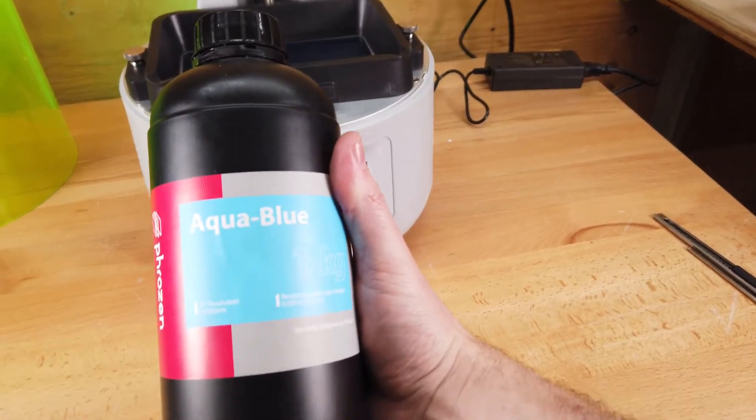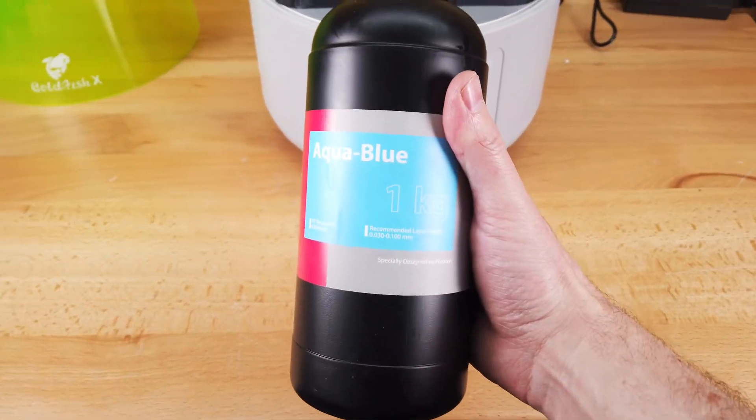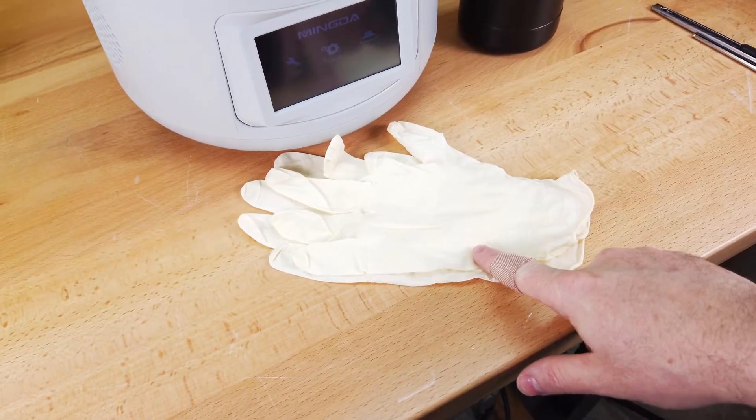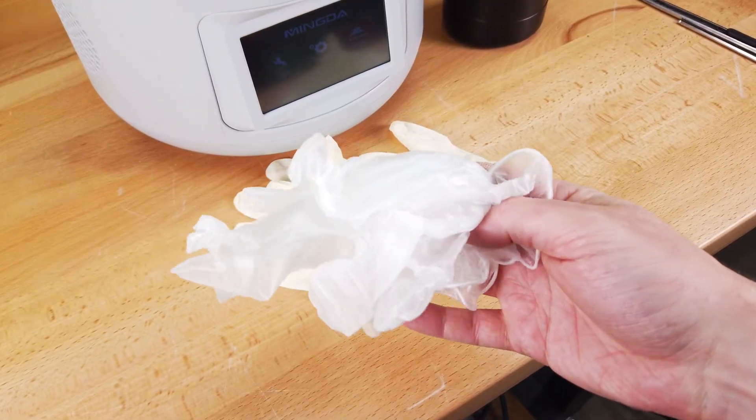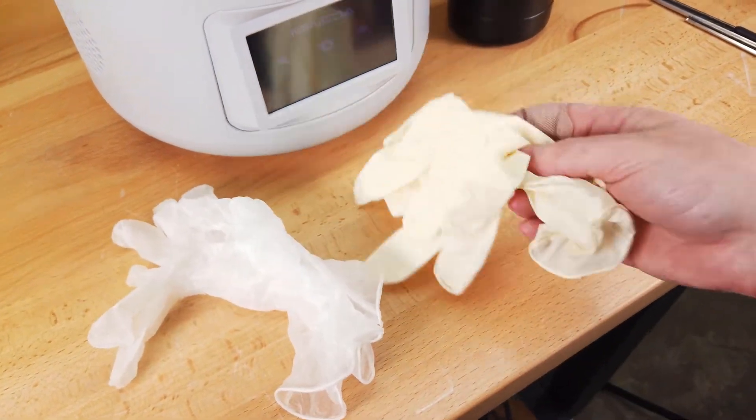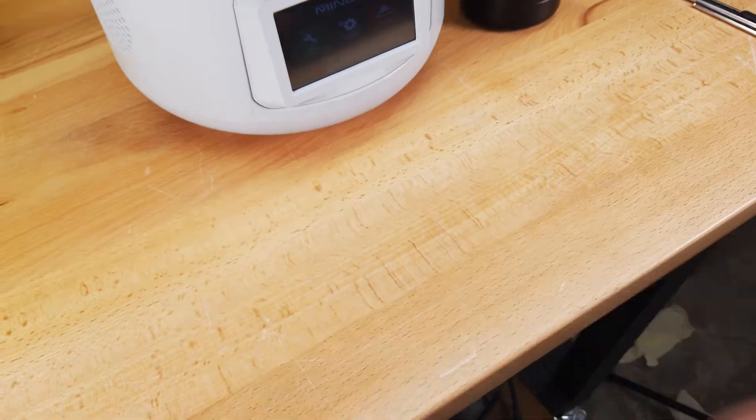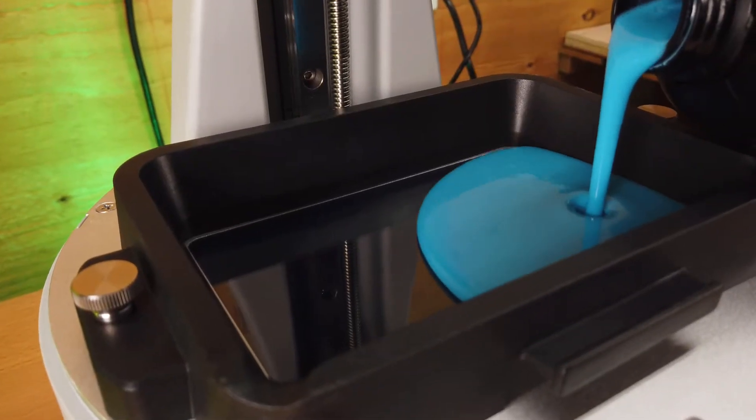This printer didn't come with any resin, so I'm going to be using some resin from Frozen. Whenever you work with resin, you're going to want to use gloves. The ones that came with this machine are most likely latex, and latex gloves will not protect you against most resins. So only use nitrile or vinyl gloves like I'm going to use.